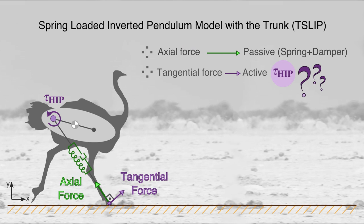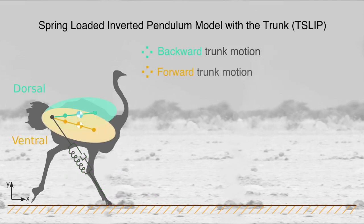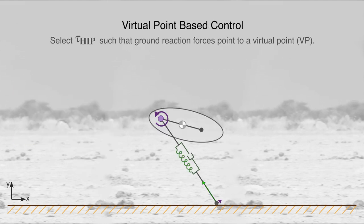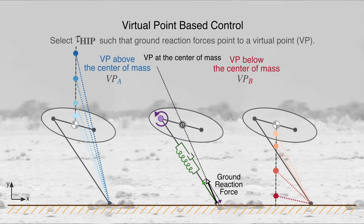Since the leg is passive, we can only modify the hip torque in this framework. The question is how to define the hip torque in a way that yields different trunk oscillation characteristics. We use a virtual point-based control scheme, where ground reaction forces are assumed to intersect at a single point. By changing the location of the virtual point, we can create trunk pitch oscillations with varying directions and magnitudes.